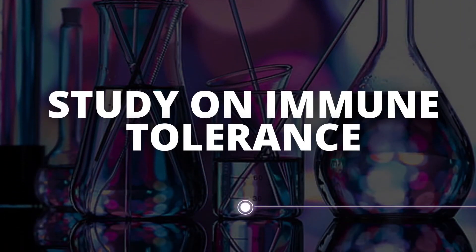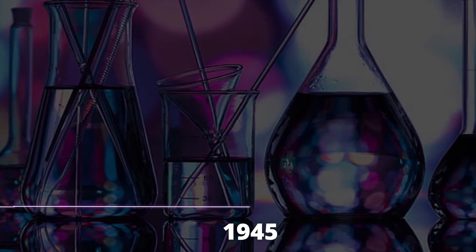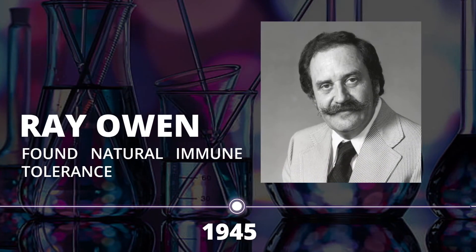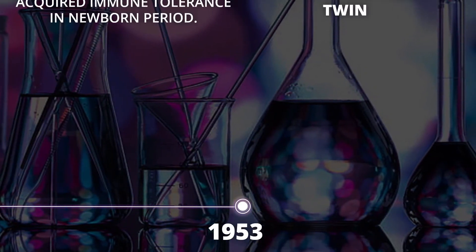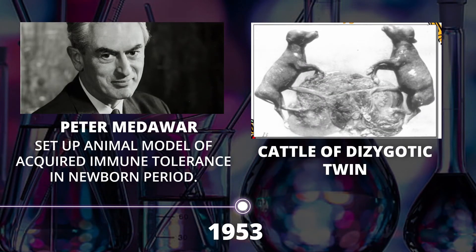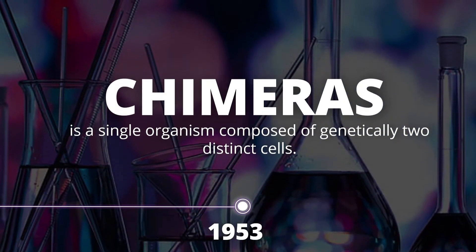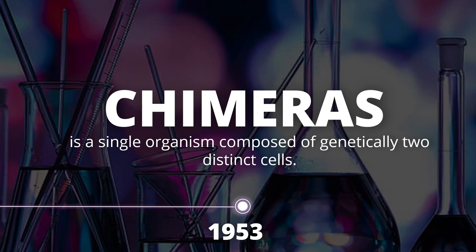Two scientists advocated the study on immune tolerance. In 1945, Owen found natural immune tolerance, and in 1953, Medawar set up an animal model of acquired immune tolerance in the newborn period. He used a model called cattle of dizygotic twins, observing that in the first batch of pregnancy, dizygotic twins would have immune tolerance, but in succeeding batches, adverse reactions were observed. The study on immune tolerance was useful in explaining chimeras — a single organism composed of two genetically distinct cells.